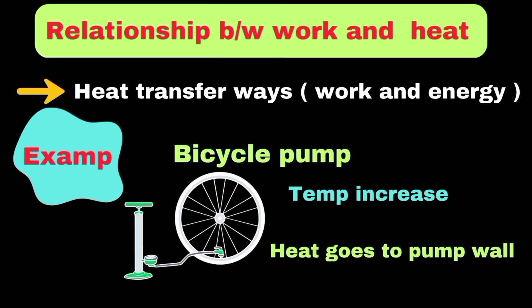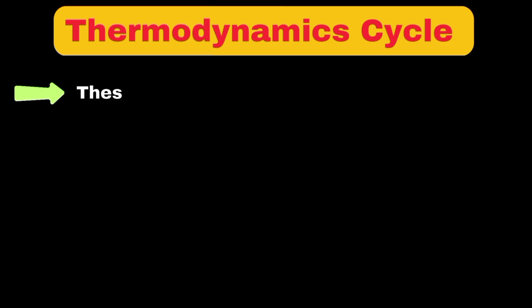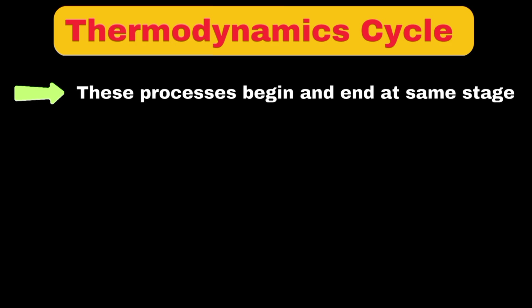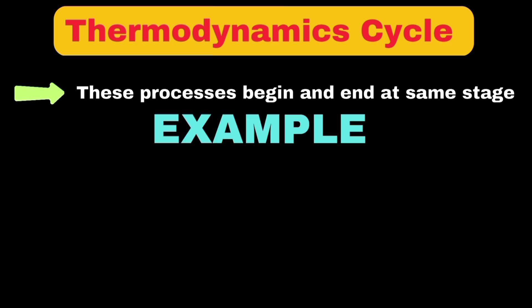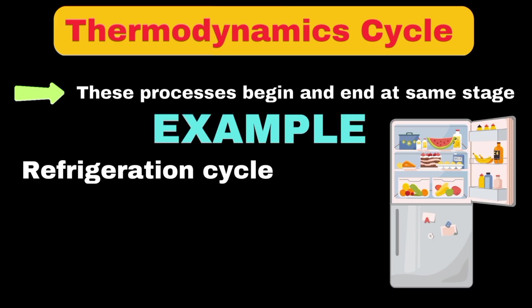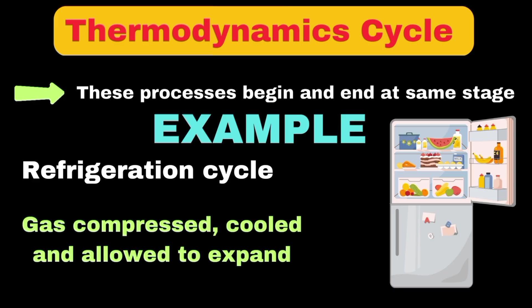Moving to thermodynamic cycles, these are series of processes that begin and end at the same state. Let's take the example of a refrigeration cycle. In this cycle, a refrigerant gas is repeatedly compressed, cooled, and allowed to expand, and then used to absorb heat from inside the refrigerator. This cycle continuously repeats to keep your food cold.